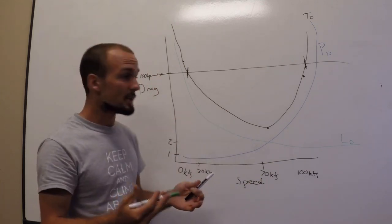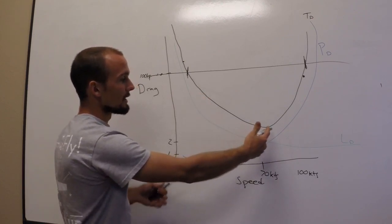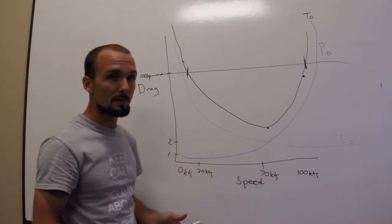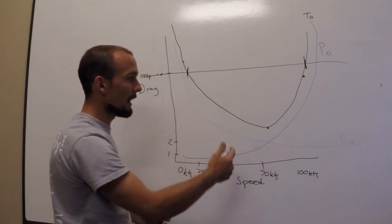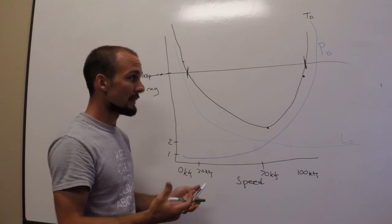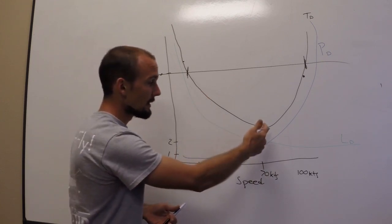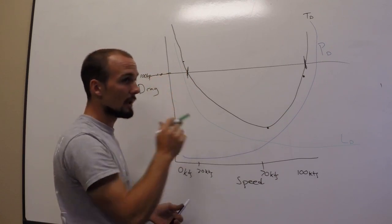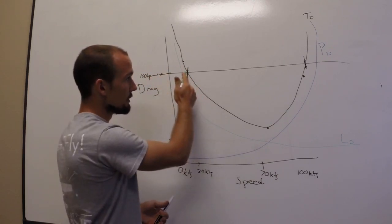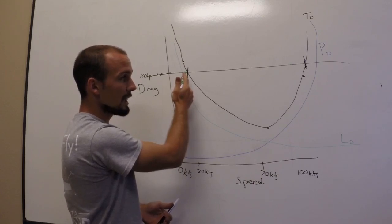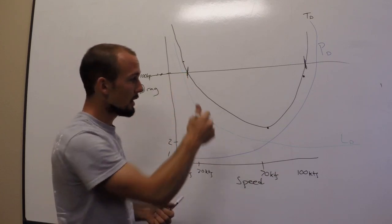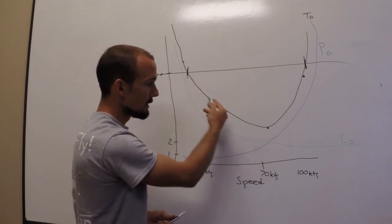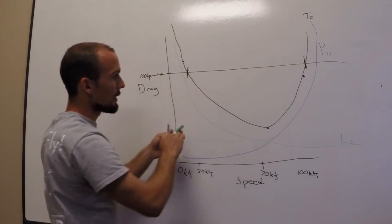So the other thing to realize here is that if you are in this region of the backside of the power curve, this region of high drag on the airplane due to low airspeed and lots of induced drag, you're going to have to get rid of that drag somehow, and you're going to have to speed up.